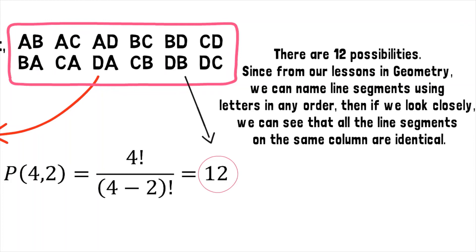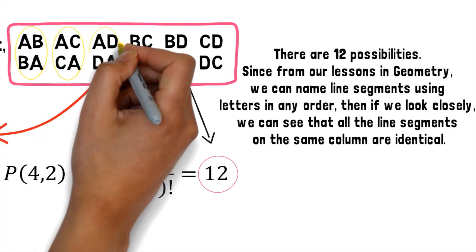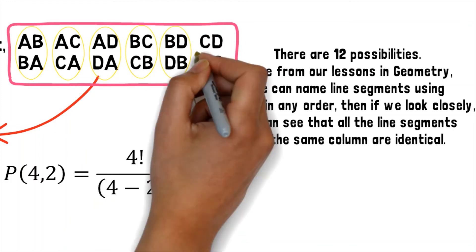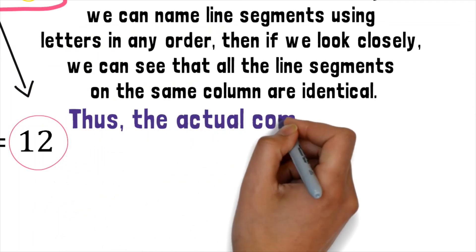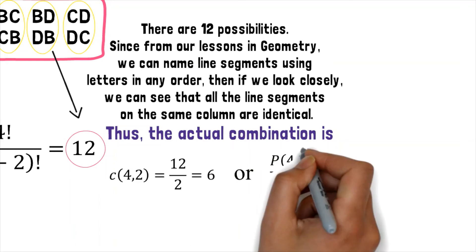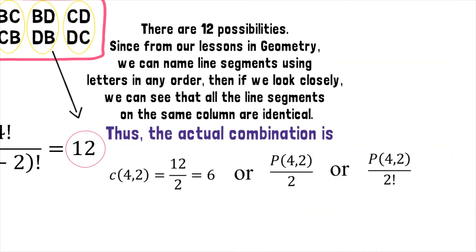Since from our lesson in geometry, we can name line segments using letters in any order. Then, if we look closely, we can see that all the line segments on the same column are identical. Thus, the actual combination is C(4,2) equals 12 divided by 2 which equals 6. Or, P(4,2) divided by 2 factorial.